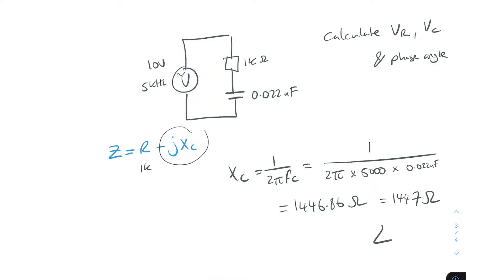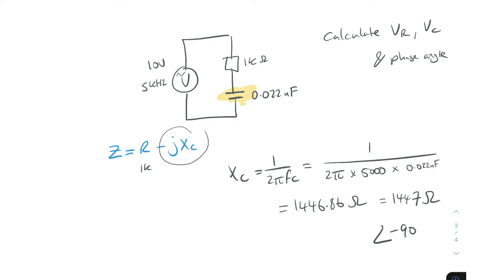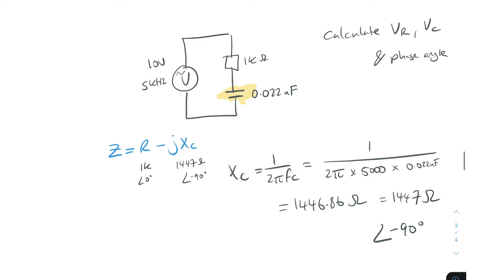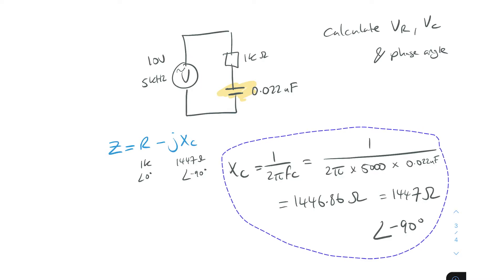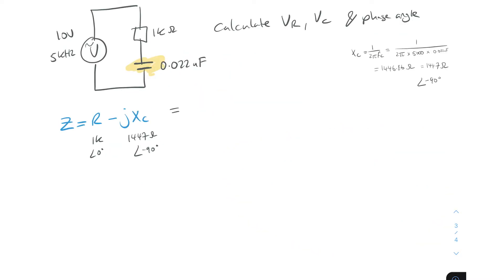Because we're talking about a capacitor, we have a minus 90 degrees phase shift, which is important as we calculate the phase angle. So we've got 1447 ohms at minus 90 degrees, and the resistor has no phase shift. We can now rewrite the impedance equation as Z = 1000 - j1447.